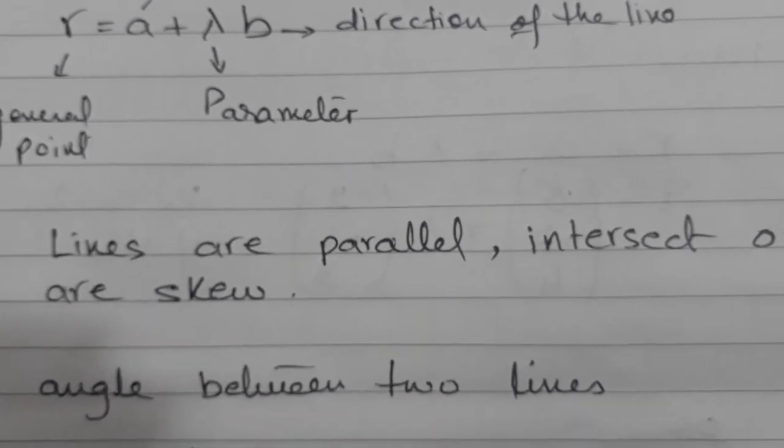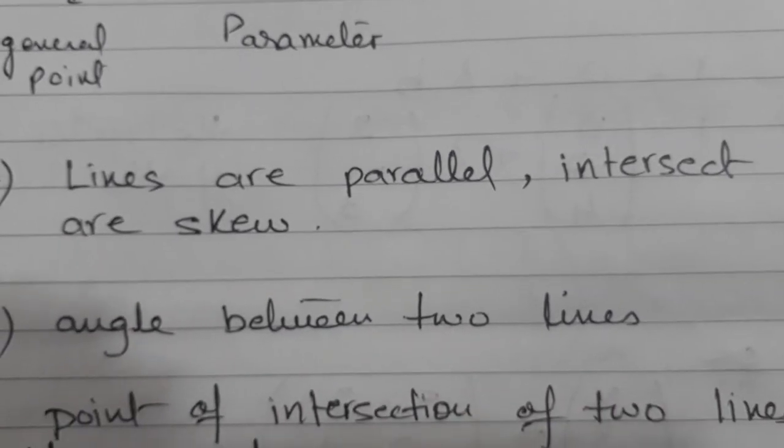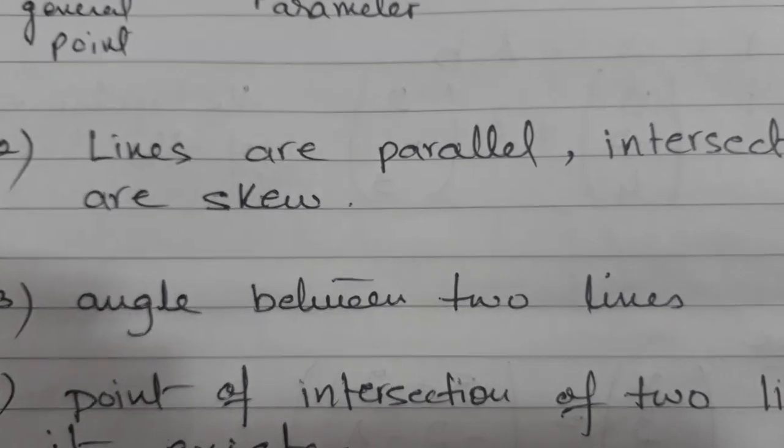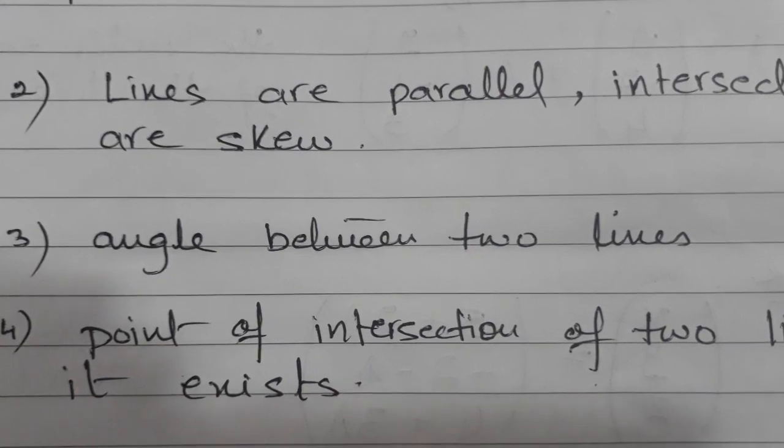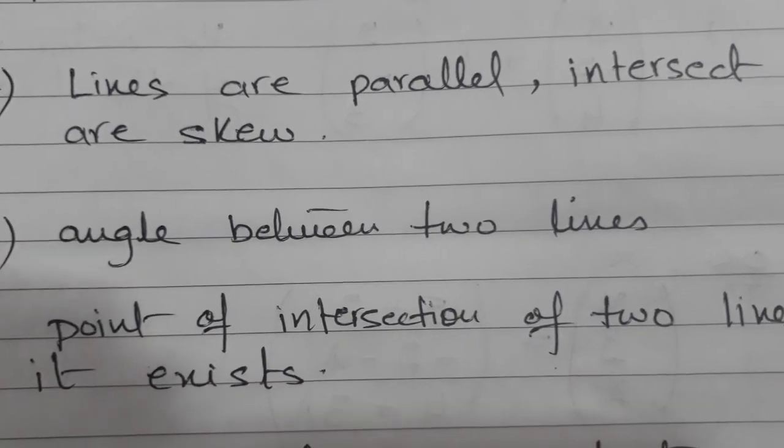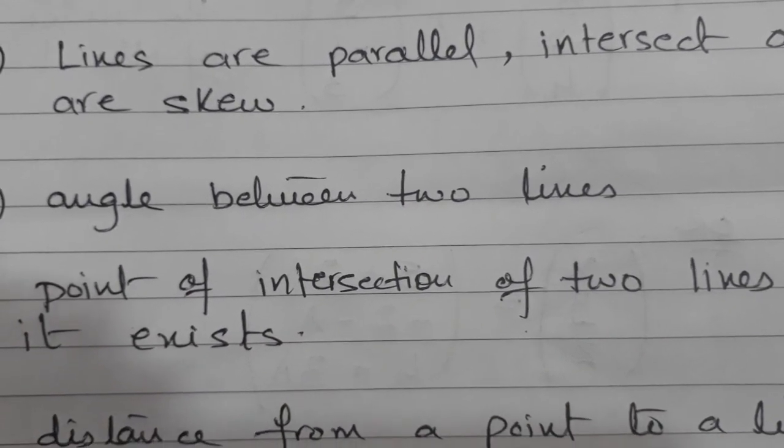Then after that, if two lines are given, you should be able to find out the angle between the lines. Then point number four, the point of intersection of the two lines if it exists.